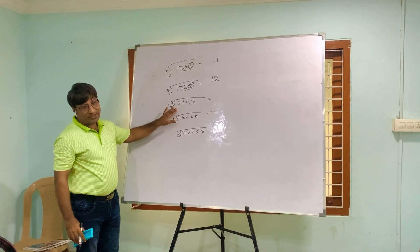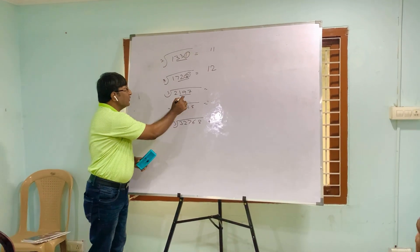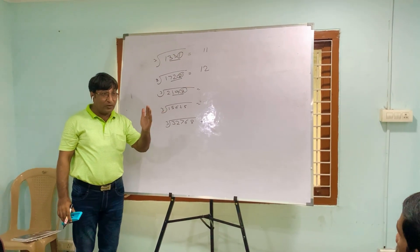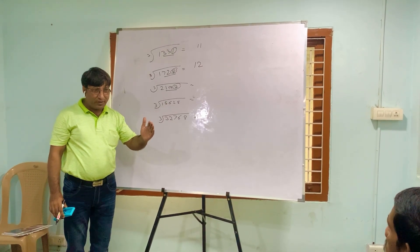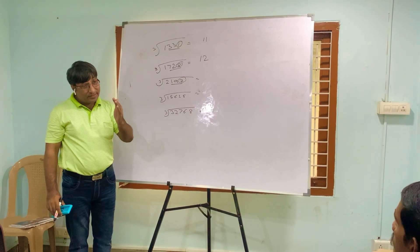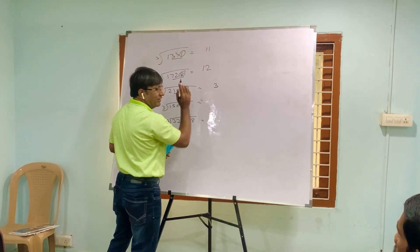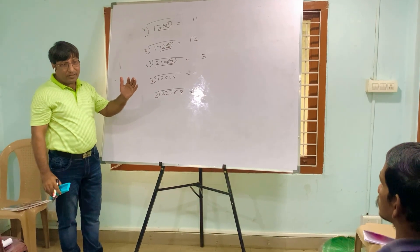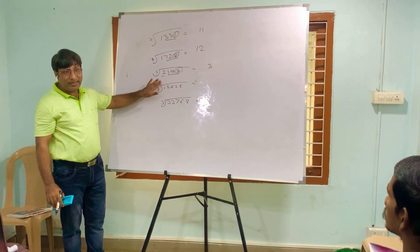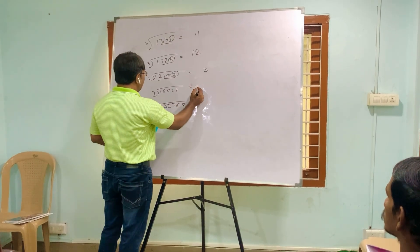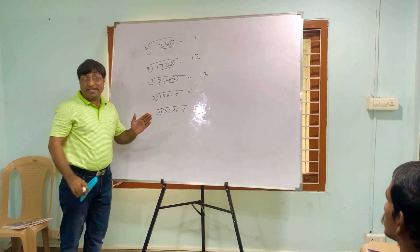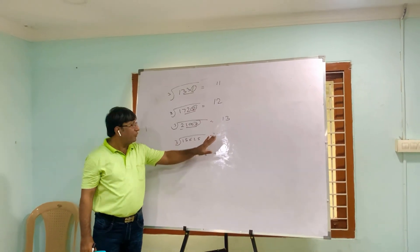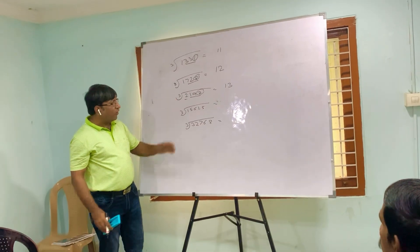For 2197, the last group of 3 digits is 197, and the unit digit is 7. Multiply 7 three times: 7 × 7 = 49, unit 9; then 9 × 7 = 63, so unit is 3. Write 3. The left number is 2. 1³ = 1 and 2³ = 8, which is greater than 2, so take 1. The answer is 13. Verify: 13 × 13 × 13 = 2197.